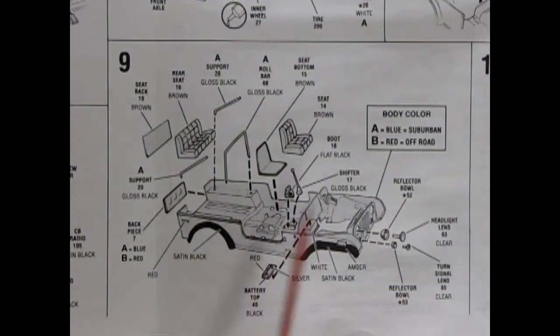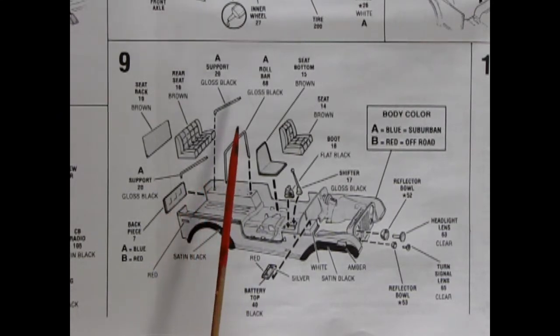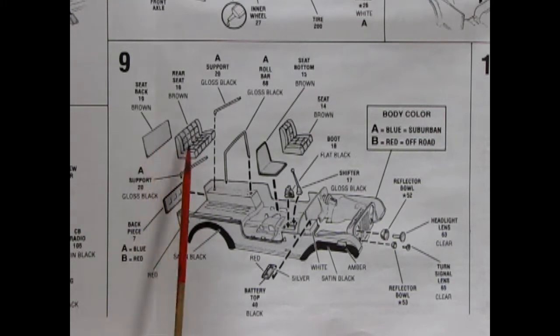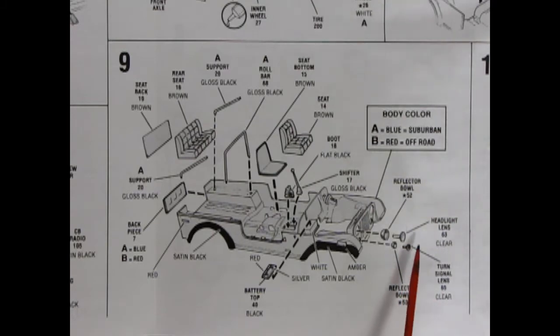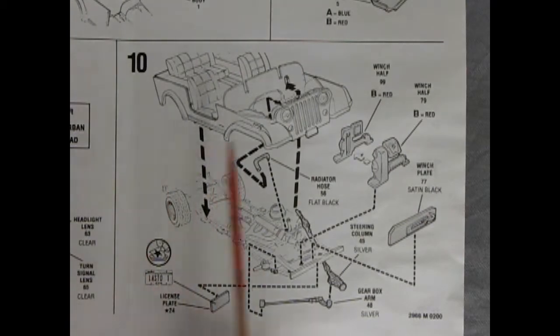Next up, we have the body with all the components going on there, like the back panel, the supports for a roll bar, the seat in two pieces for the back, and the same for the front with our buckets, the battery top, and our headlights and reflectors all going together on the body. Panel 10 shows our completed body being mounted onto the chassis and all the components you need in between.